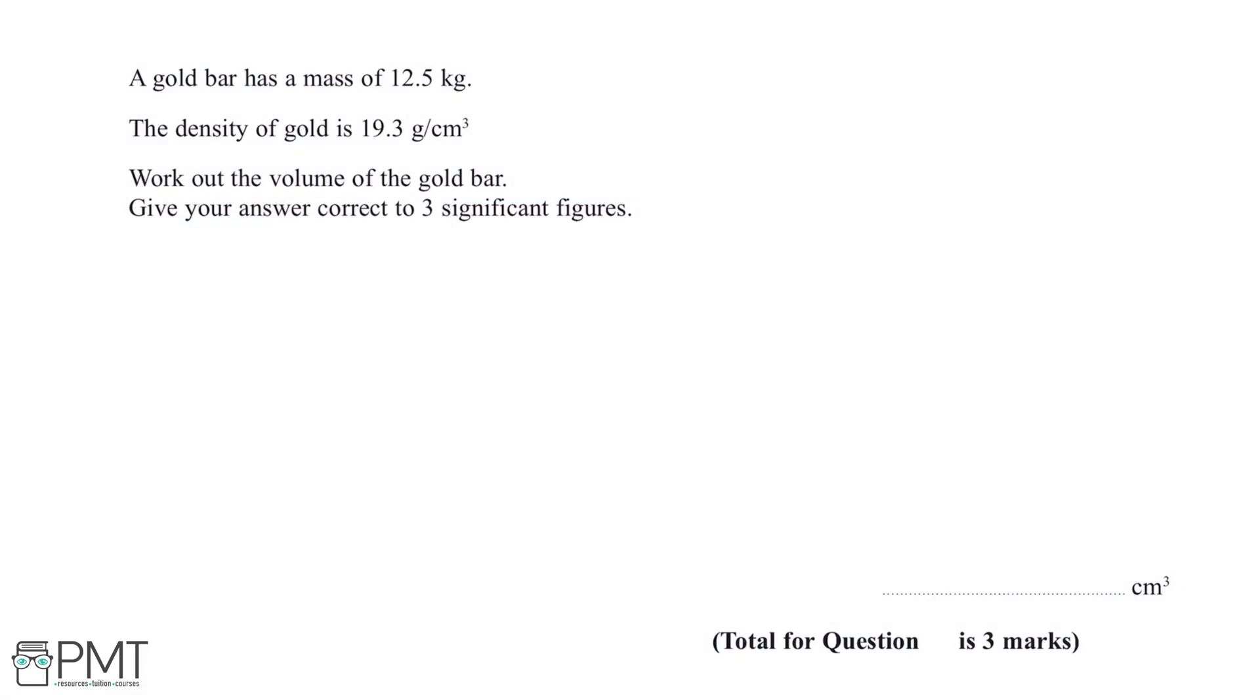A gold bar has a mass of 12.5 kg. The density of the gold is 19.3 g per cm³. Work out the volume of the gold bar. Give your answer correct to three significant figures.